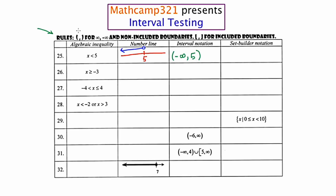You're going to use a parenthesis — whether it's a front-end parenthesis or a back-end parenthesis — for infinity, for negative infinity, and for non-included boundaries. You're going to use brackets for included boundaries. Now the last thing we're going to do is set builder notation, which is what our Algebra 2 book uses in the back. It's a little bit cumbersome — it's just like the algebraic inequality, but it's preceded with an x and then a bar. So if you were to see this problem in the back of the book, it would look like: x such that x is less than 5.